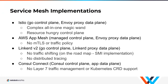Another service mesh implementation comes from AWS: App Mesh is a managed control plane — you don't have to run it yourself, it's totally managed by AWS. Like Istio, it uses the Envoy proxy for the data plane. It's a new technology and doesn't yet have all Istio features — it has no mTLS and no traffic policy — but it's evolving, and at some point there may be feature parity between the two.